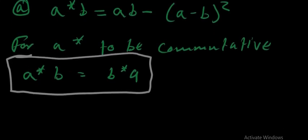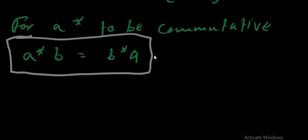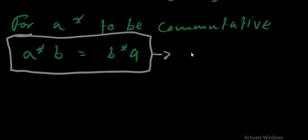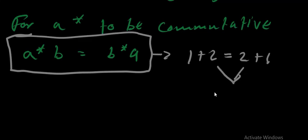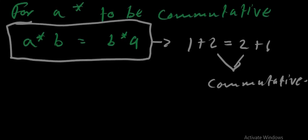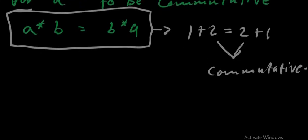When we talk about numbers, this simply means that for a binary operation to be commutative, for example, 1 plus 2 is the same as 2 plus 1 — these are the same thing, so this relationship is said to be commutative. But we are not talking about that; we are talking about the operation which we have been given. So let's solve that. For it to be commutative, a★b should equal b★a.